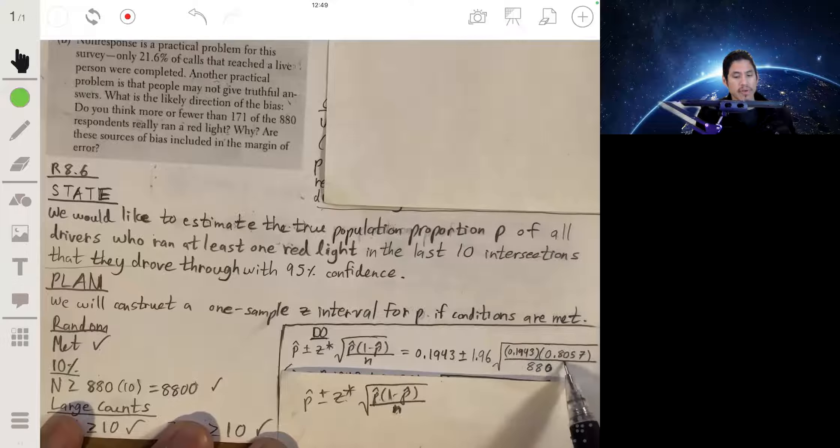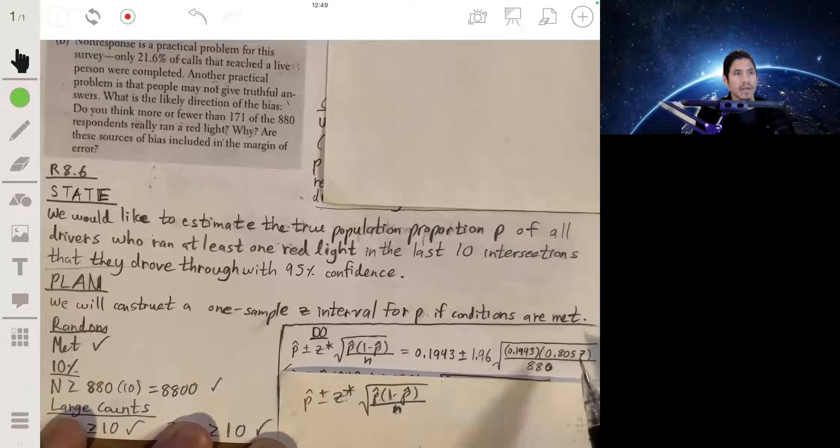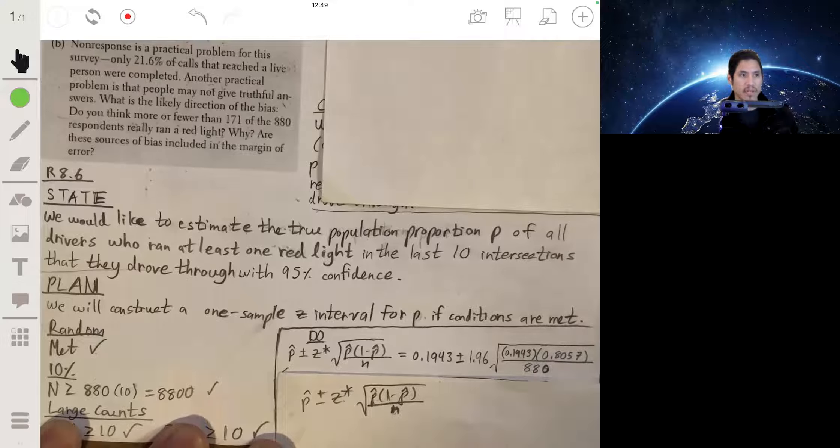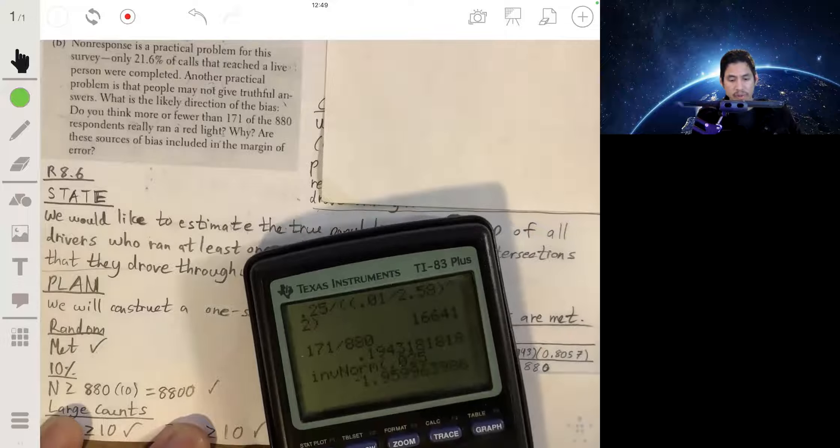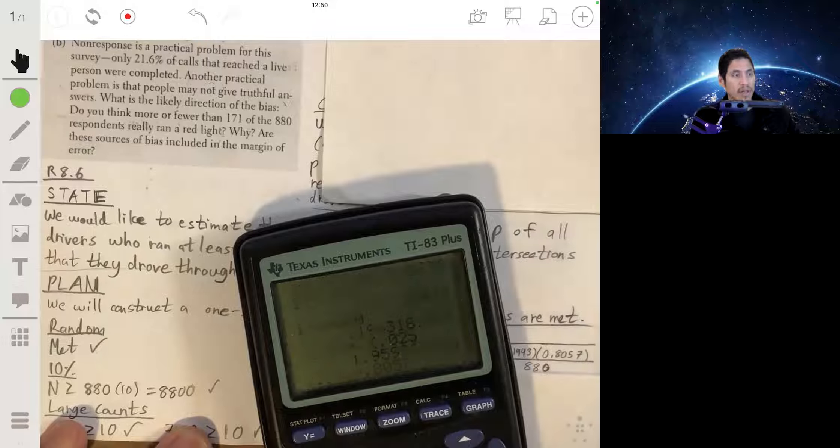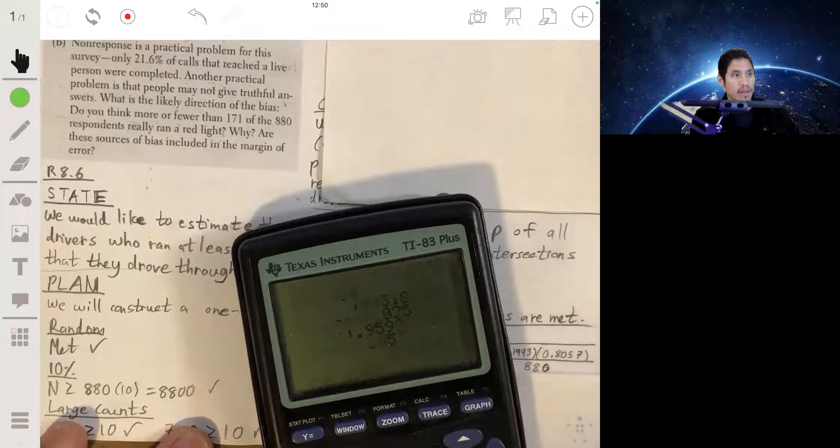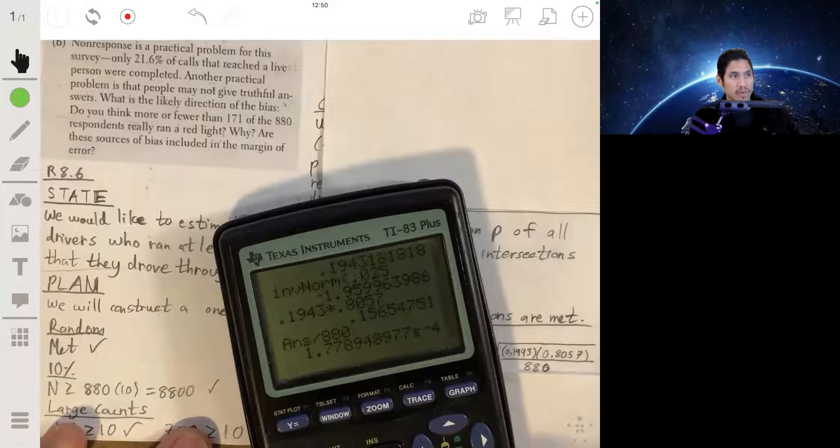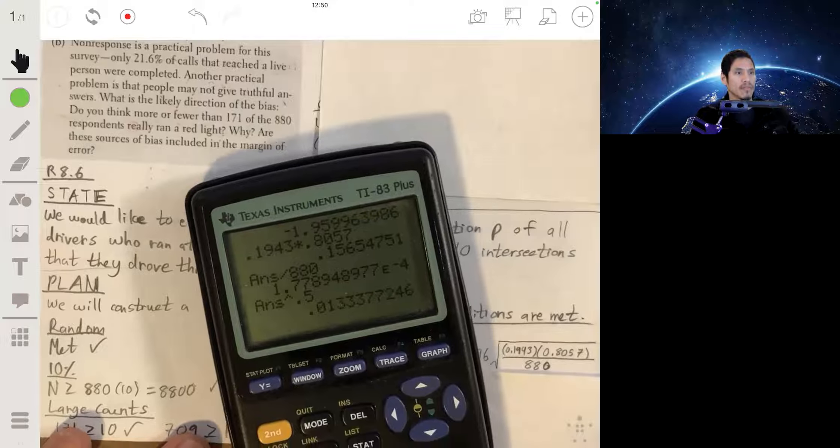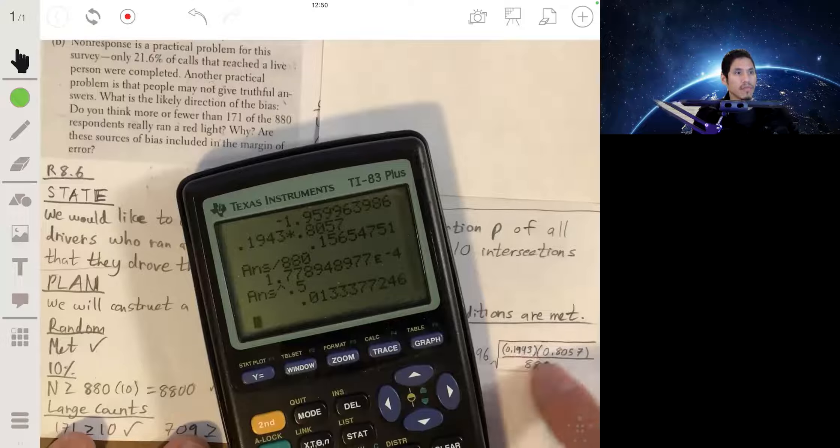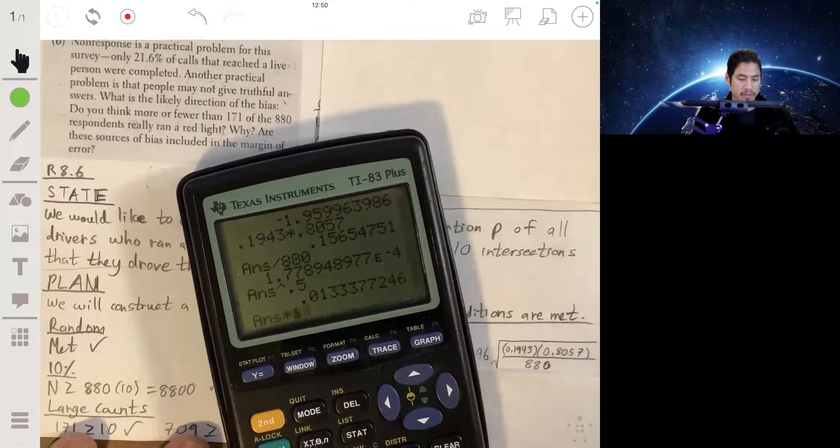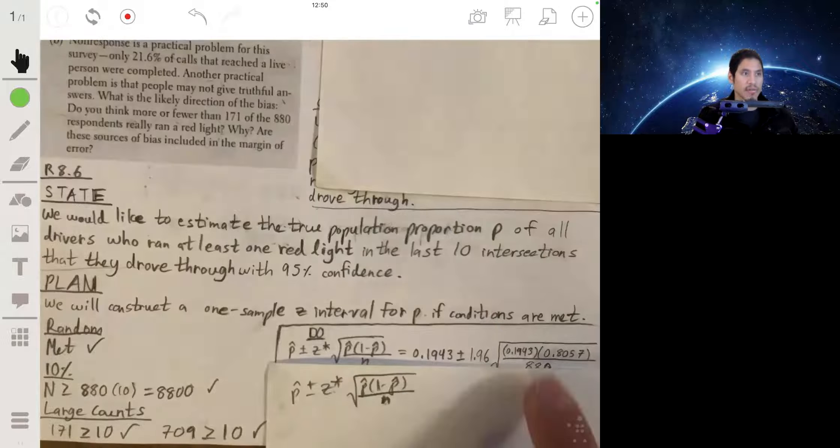0.1943 times 0.8057 over 880. If you're a little worried about getting your algebra right, I would calculate this first and then work my way outside. So I would do 0.1943 times 0.8057, then divide by 880, then take the square root of this number, which is the same as raising it to the 0.5 power. That'll give me my value of the square root, and then I multiply this by 1.96. Now that gives me my margin of error, 0.026 for that whole thing.